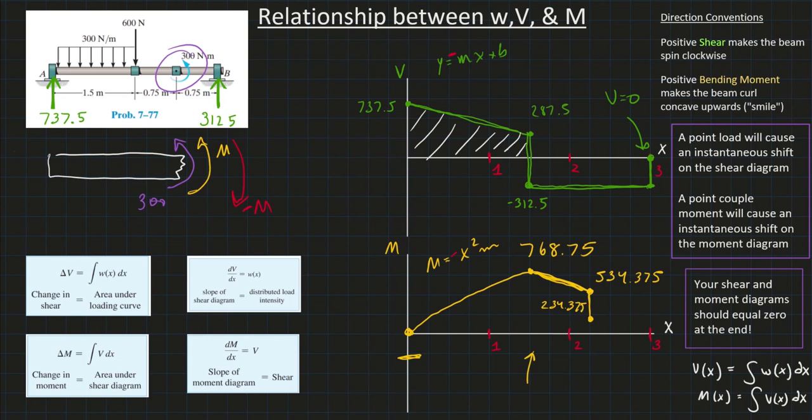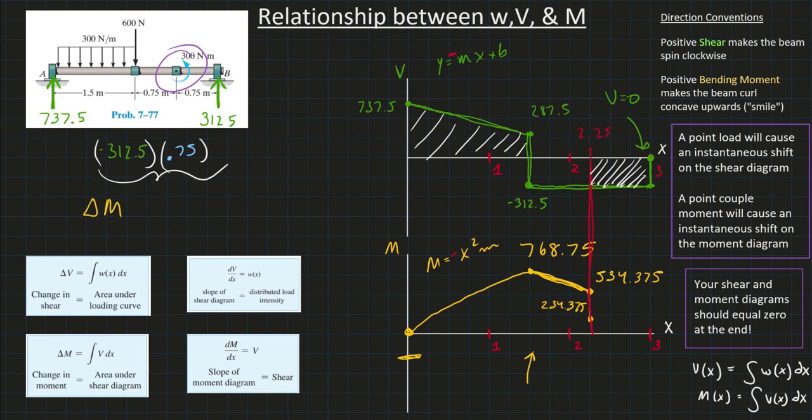234.375. Okay. So, again, this is all at x is equal to 2.25. So, now I got to take the rest of this area to calculate my final delta m. So, I'll do that. That's going to be another rectangle whose length. Well, what's the length of that? Well, this is 2.25. So, what's this distance in between 2.25 and 3? Well, that distance is going to be 0.75 multiplied by the height of this rectangle, which is still a negative 312.5. You'll map that out. And our final change in our moment will be a negative 234.375.